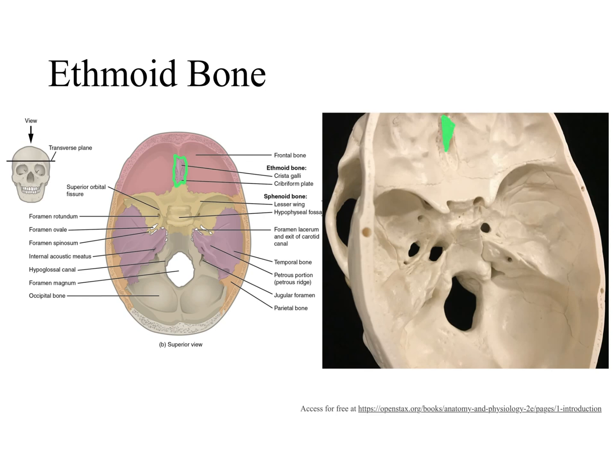That triangular structure looks like a rooster's crest, and consequently it was named crista galli — the crest of the rooster. The crista galli is very important because it basically anchors our brain anteriorly; it serves as a point of attachment for the dura mater, which is one of the three meninges that protect our brain.